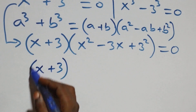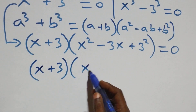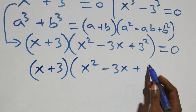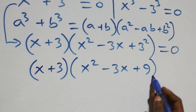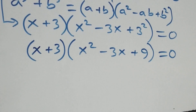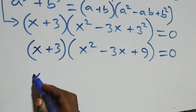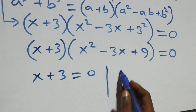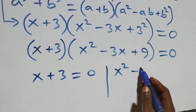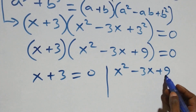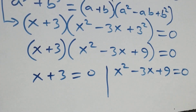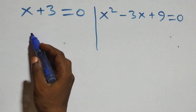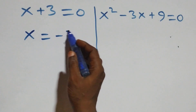This becomes x plus 3, times x squared minus 3x plus 9, equals 0. From here we have two cases: x plus 3 equals 0, or x squared minus 3x plus 9 equals 0.